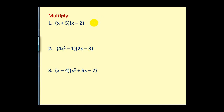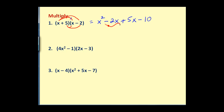Let's look at a couple more examples — another binomial times a binomial. We start with x and multiply it by both terms in the other binomial: x times x equals x², and x times -2 equals -2x. Then multiply 5 times both terms: 5 times x equals 5x, and 5 times -2 equals -10. We write -10 rather than plus -10. Combining like terms, the final product is x² + 3x - 10.